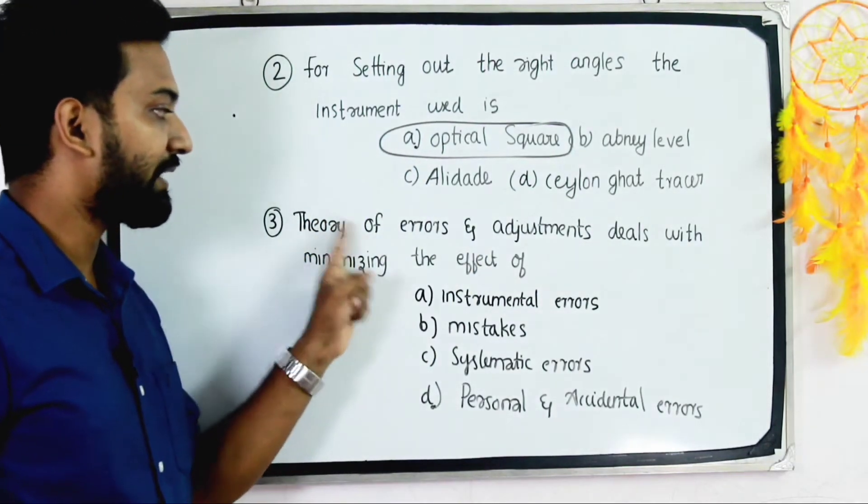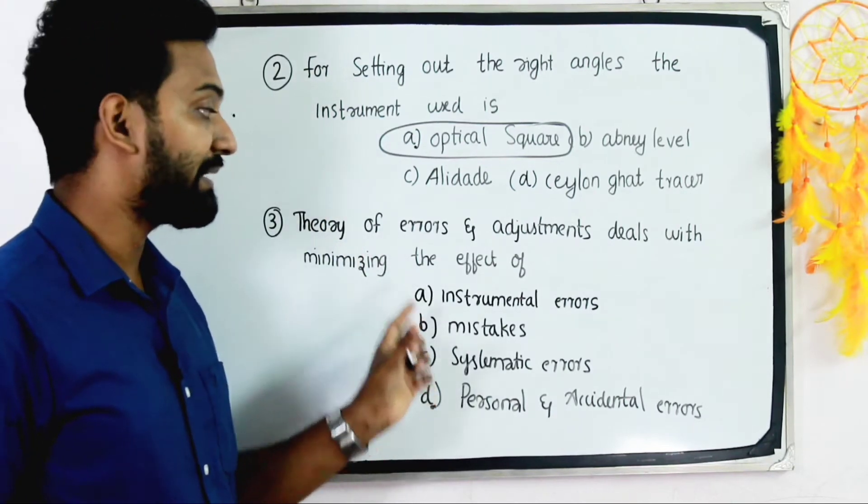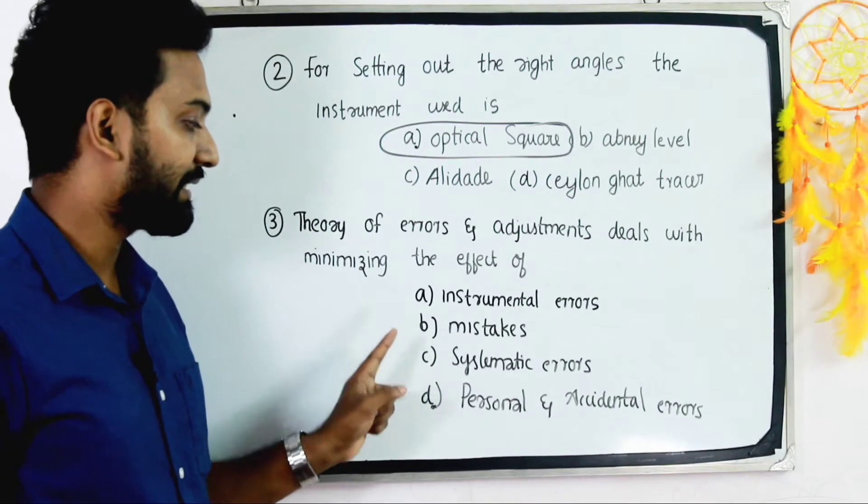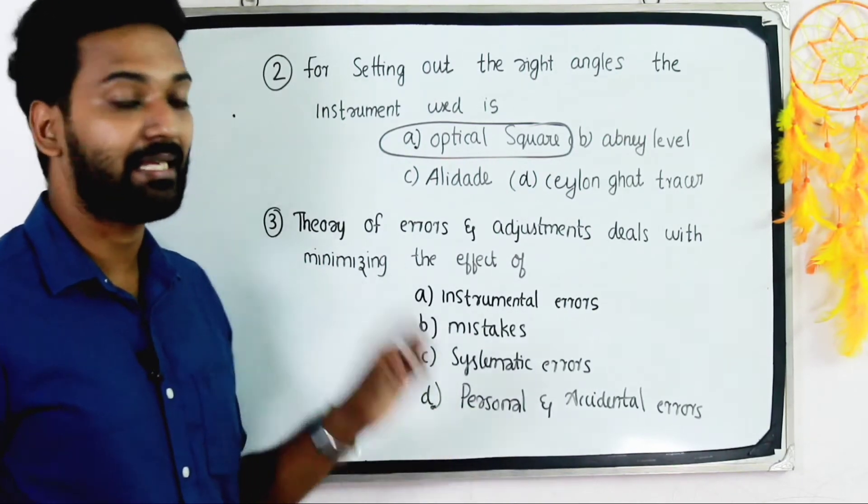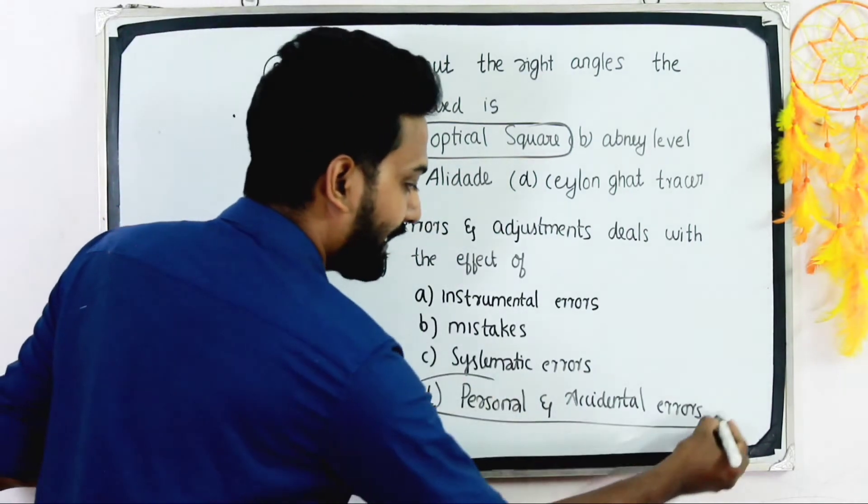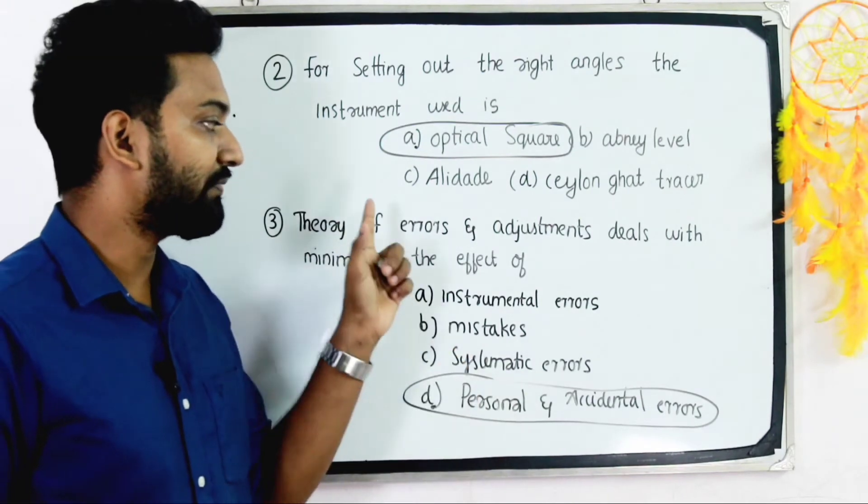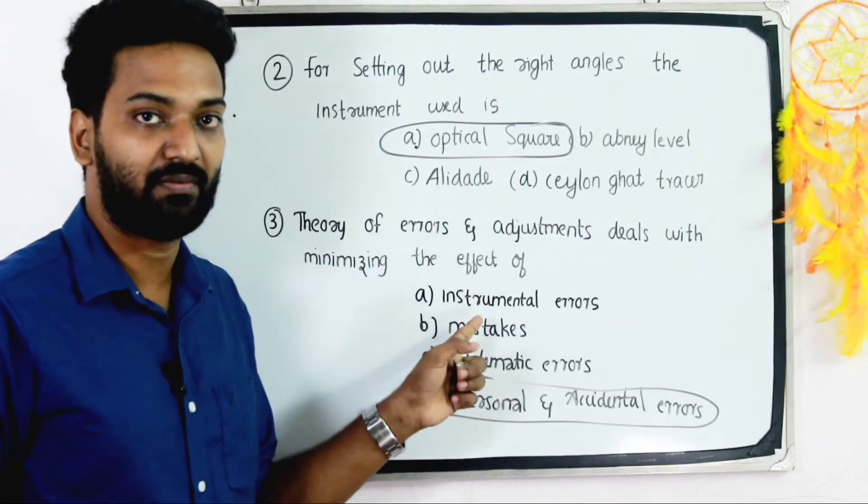Next question. Theory of errors and adjustments deals with minimizing the effect of: Option A - instrumental errors, B - mistakes, C - systematic errors, D - personal and accidental errors. The answer is option D, personal and accidental errors.